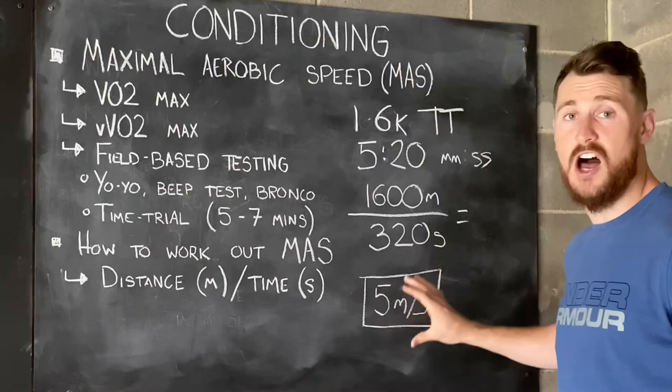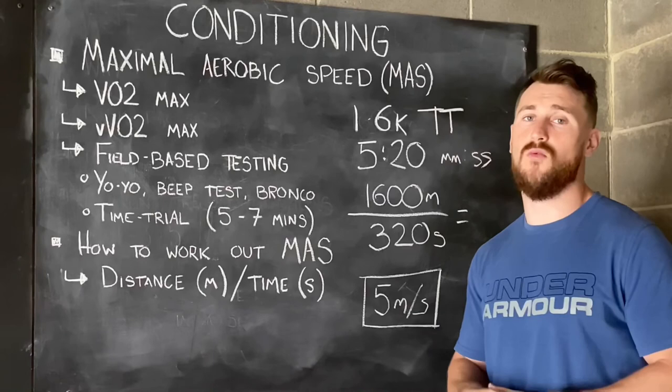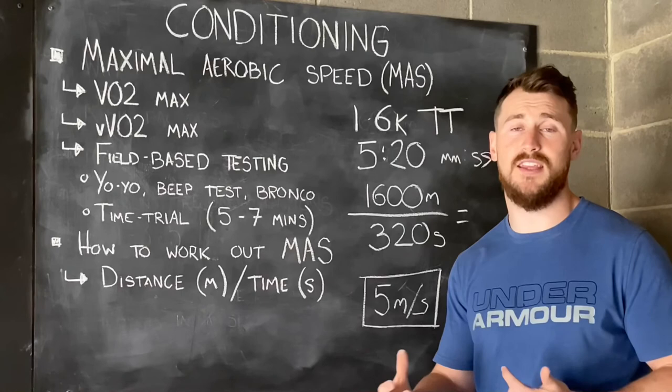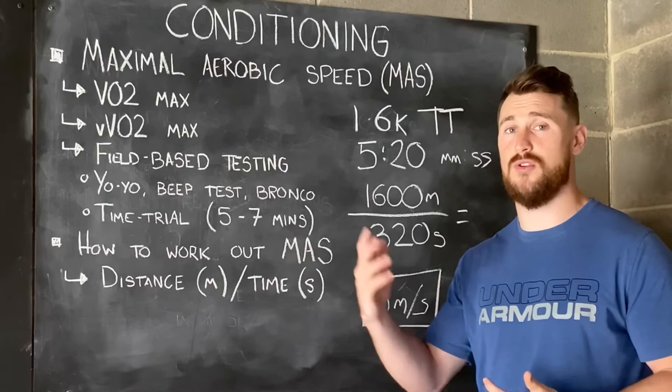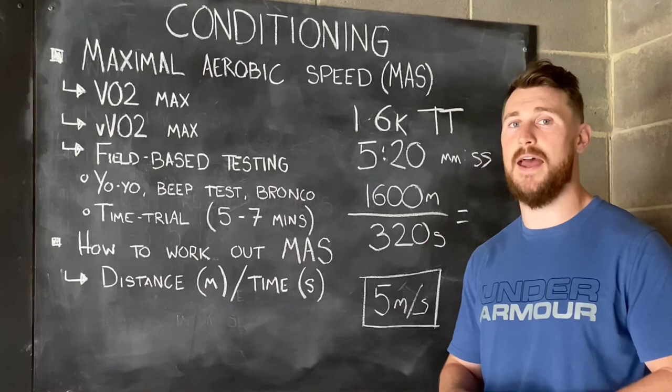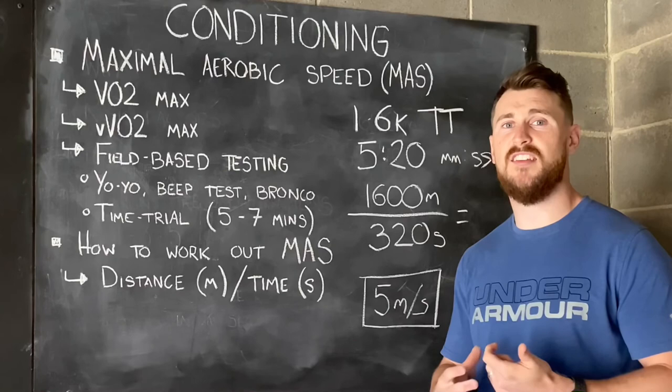The great thing about this test is that we can retest the same distance and measure progress in the athlete, but we can also use our 5 metres per second for prescription of training. Maximal aerobic speed not only gives you a fitness measure, but it can also be used to implement individualised conditioning training sessions — and in Part 2 of this video, that's what I'm going to talk about.